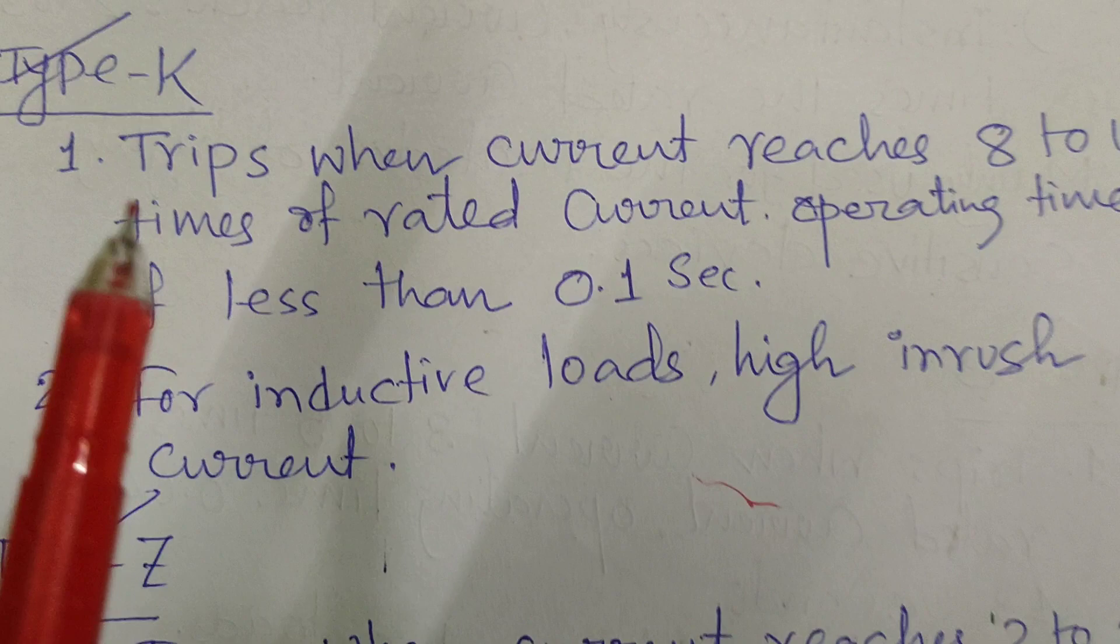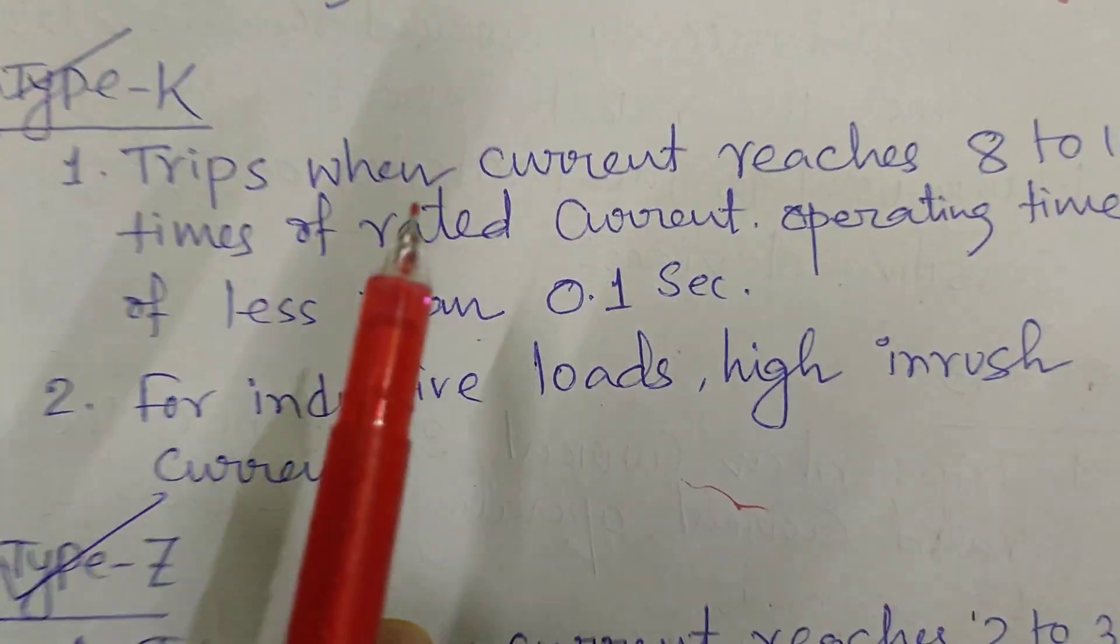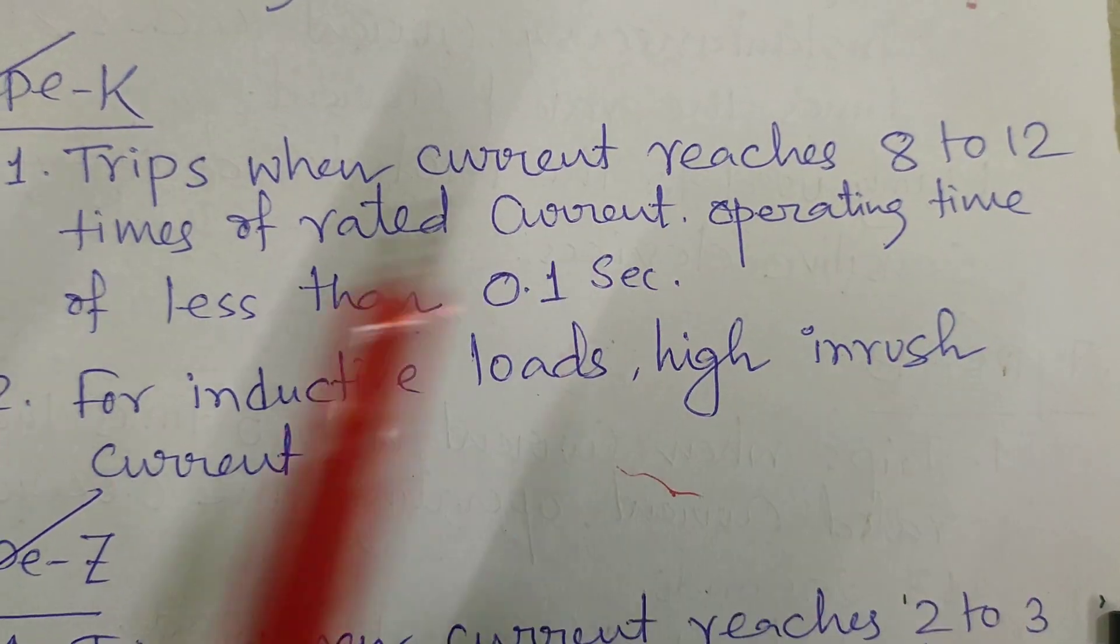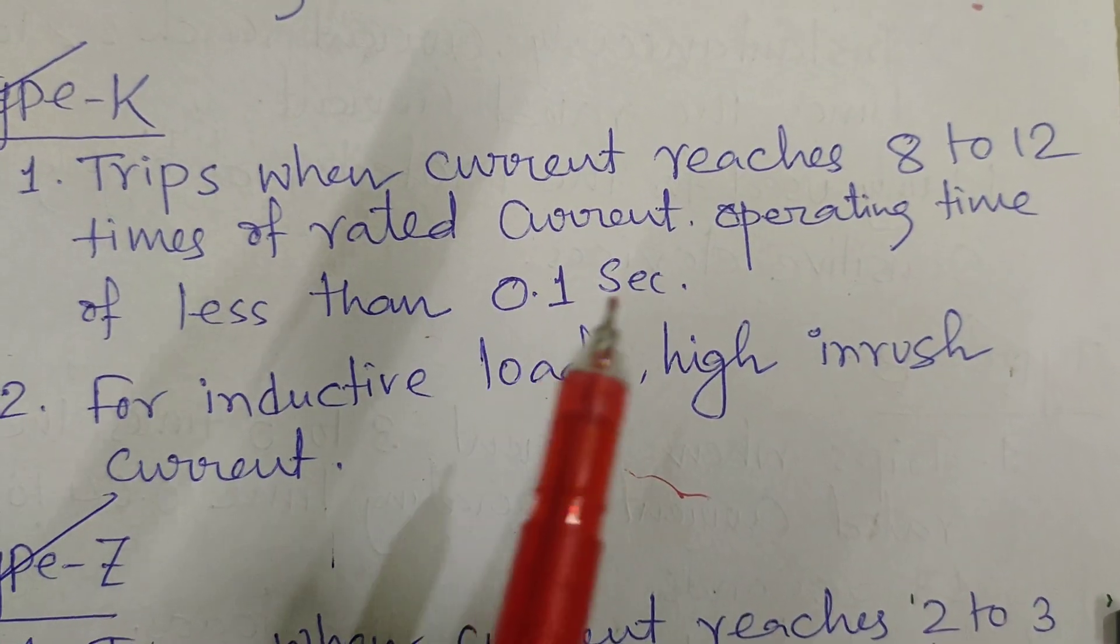K-type MCB trips when current reaches 8 to 12 times of rated current. Operating time of less than 0.1 seconds.